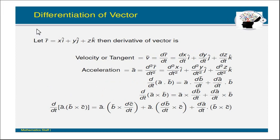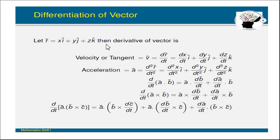Now we look at differentiation of a vector. Let r-bar equal x·i-bar plus y·j-bar plus z·k-bar. Then dr-bar/dt represents the velocity or tangent of the curve, and equals (dx/dt)·i-bar plus (dy/dt)·j-bar plus (dz/dt)·k-bar. Similarly, acceleration is the second derivative: d²r-bar/dt² equals (d²x/dt²)·i-bar plus (d²y/dt²)·j-bar plus (d²z/dt²)·k-bar.